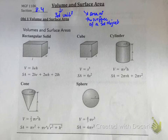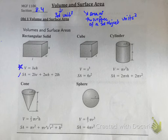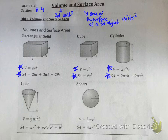Surface area units are going to be just like regular area — they're going to be squared, so you'll have feet squared, inches squared, etc. The ones you have to memorize for the test will be the rectangular solid, the cube, and the cylinder — volume and surface area for each. I'm going to go over all five of these, so let's look at them together.